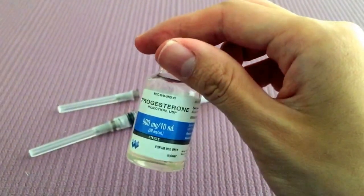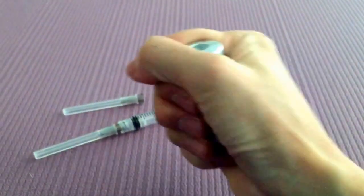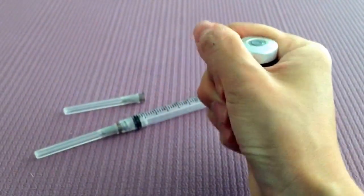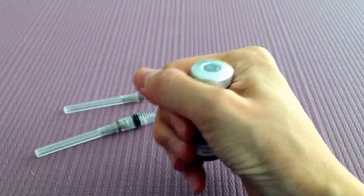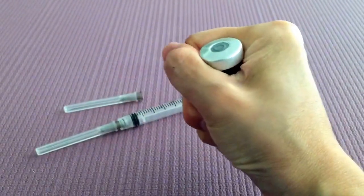So one tip before we draw this up, I like to warm it up in my hands for about two minutes. This helps thin out the oil a bit and makes drawing it up a lot easier.